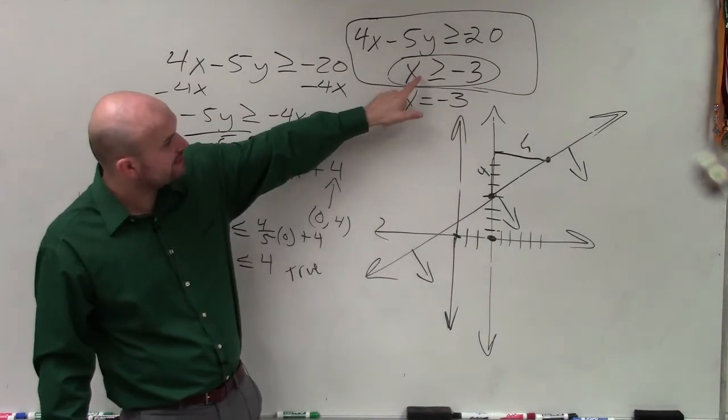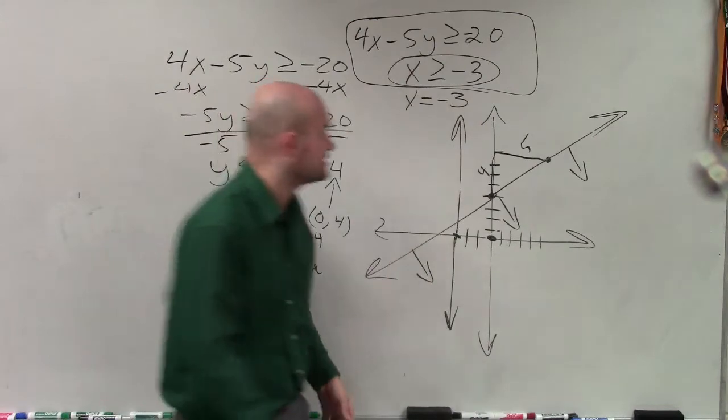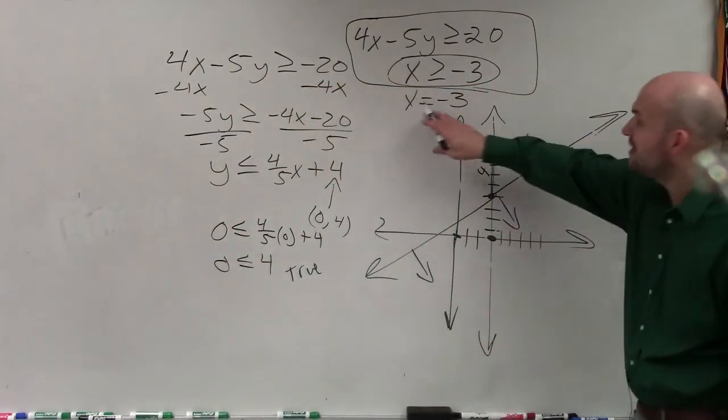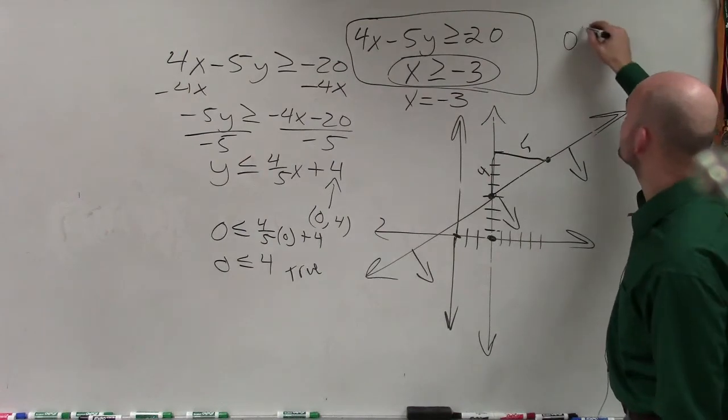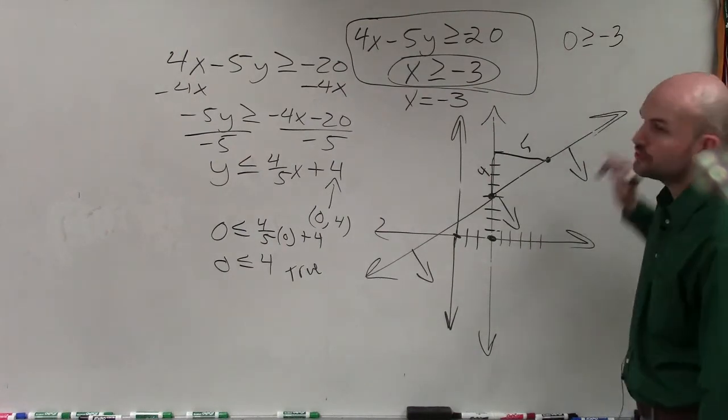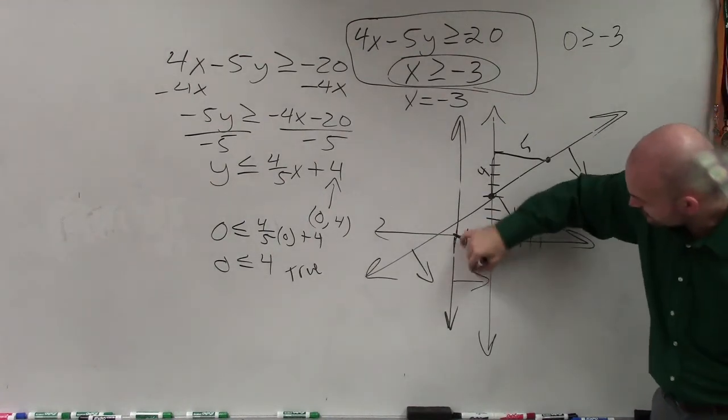And now we just need to, again, determine where should I shade, to the right or to the left. So again, we can use our test point, which here is 0, 0. I don't have a place to put the 0 for y. So I just put it in for x. And is 0 greater or equal to negative 3? Yes, that's true. So I shade this way.